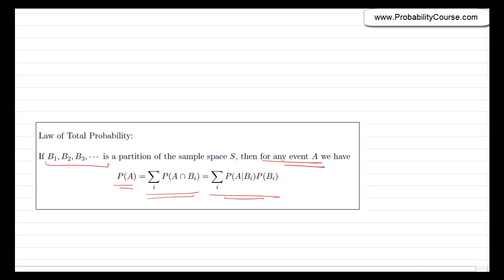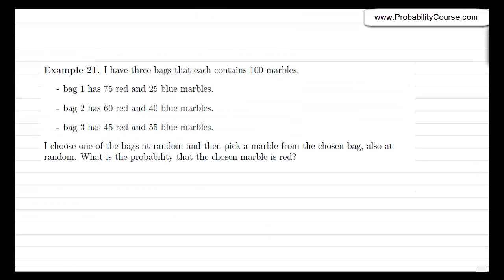Let's look at an example. I have three bags that each contain 100 marbles. Bag 1 has 75 red marbles and 25 blue marbles. Bag 2 has 60 red and 40 blue marbles. Bag 3 has 45 red and 55 blue marbles. I do this random experiment: I choose one of the bags at random and then pick a marble from that bag at random. The question is: what is the probability that the chosen marble is red? I suggest you solve this problem before watching the rest of the video.